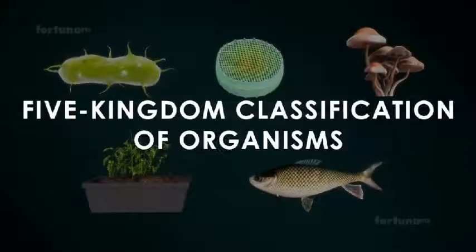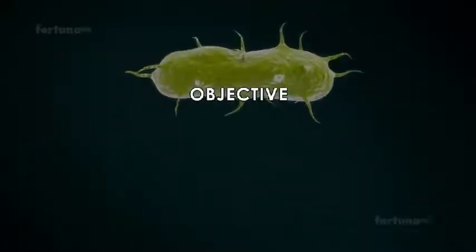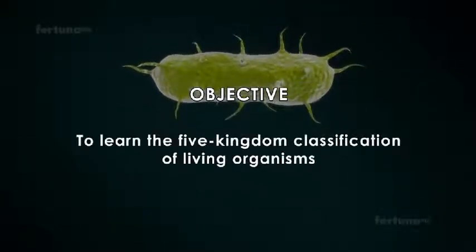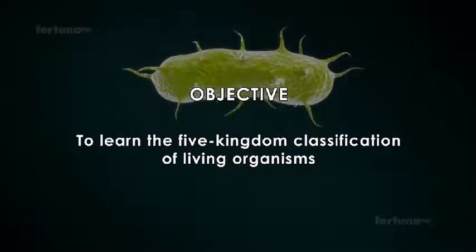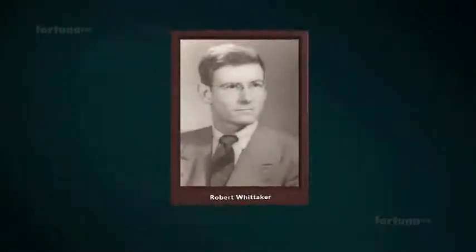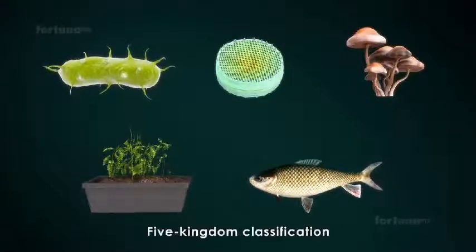Five Kingdom Classification of Organisms. Objective: to learn the Five Kingdom Classification of Living Organisms. In 1969, ecologist Robert Harding Whittaker divided all living organisms into five categories, commonly referred to as the Five Kingdom Classification.